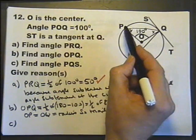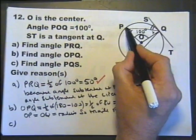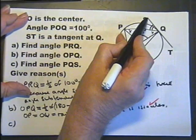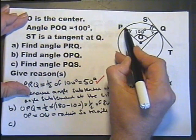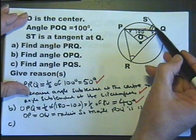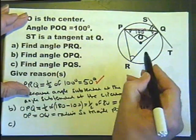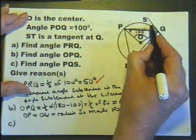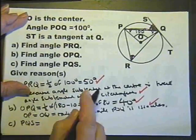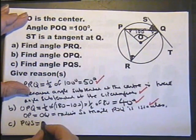Part C: find angle PQS. Let's look at that again. That is a tangent and that is a chord. This is called the angle between a tangent and a chord. The angle between a tangent and the chord equals the angle subtended by that chord in the alternate segment. In other words, this angle here is the same as this angle here.